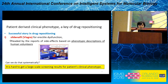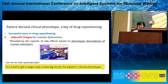For example, we know the successful story of drug repositioning: Viagra. It was originally developed as a cardiovascular drug, but was repositioned by phenotype reports from human volunteers for other diseases. So my question is: can we make a systematic pipeline for drug repositioning based on the clinical phenotype of patients?